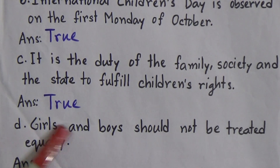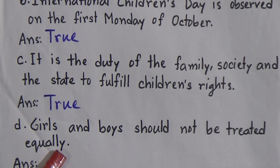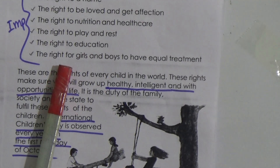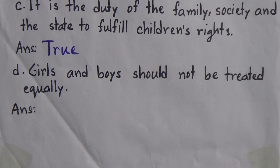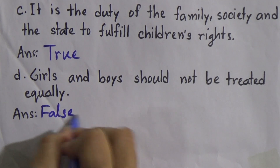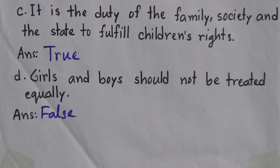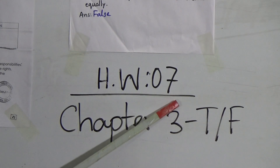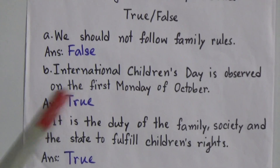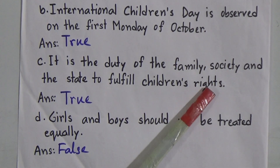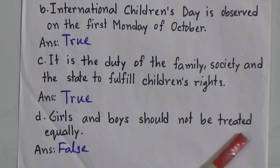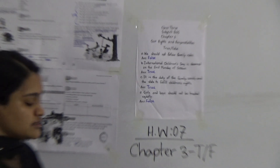Statement D: 'Girls and boys should not be treated equally' — this is false, because the right for girls and boys to have equal treatment means they should be treated equally. To recap: Statement A is false, Statement B is true, Statement C is true, Statement D is false. This is Homework Number 7 — all of you will do these four true/false questions.